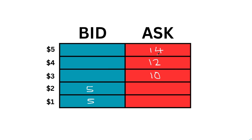On the ask we have ten sellers at three, twelve at four, and fourteen at five dollars. The way markets move is that market executors choose to cross the spread and consume the passive orders on the bid or ask, causing price to tick up or tick down. If sellers execute aggressively, they need to consume five contracts to tick price down to have current price rest at two dollars. In general, the more contracts on each level, the harder or thicker it is for price to move through those levels.